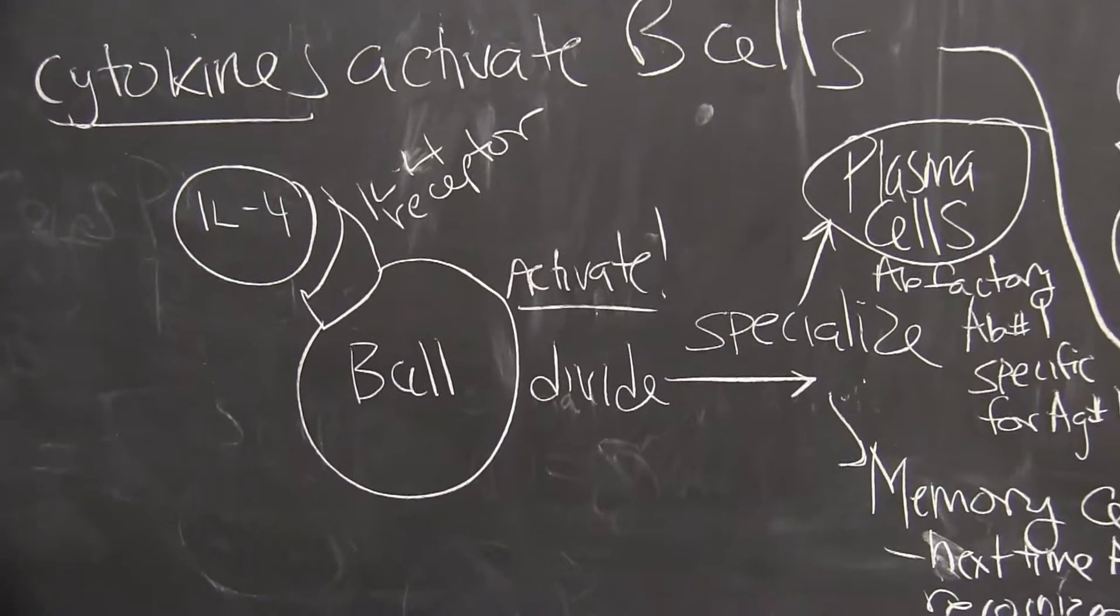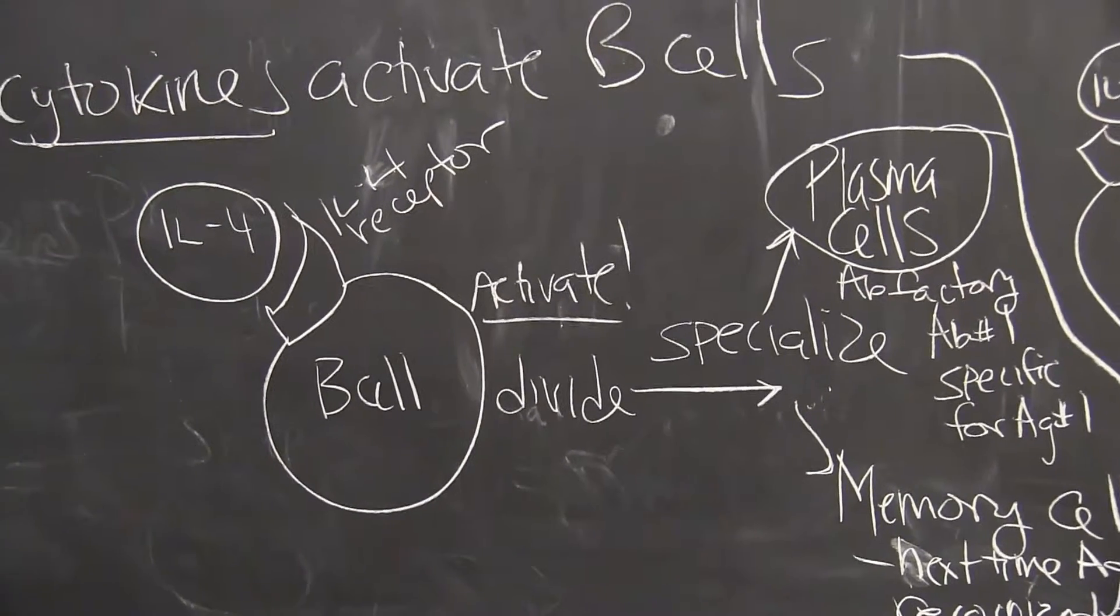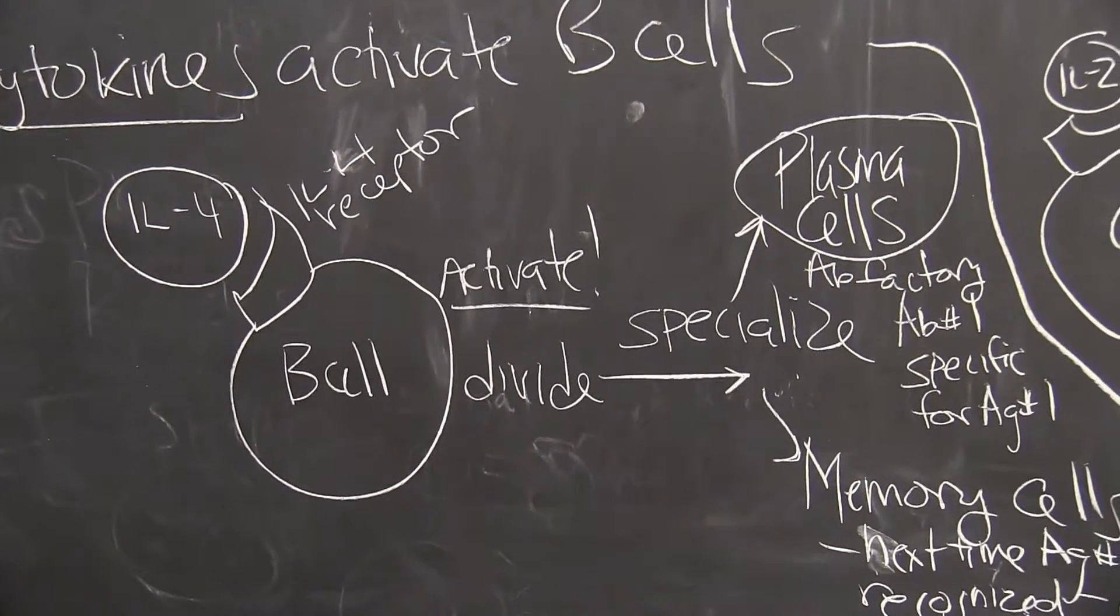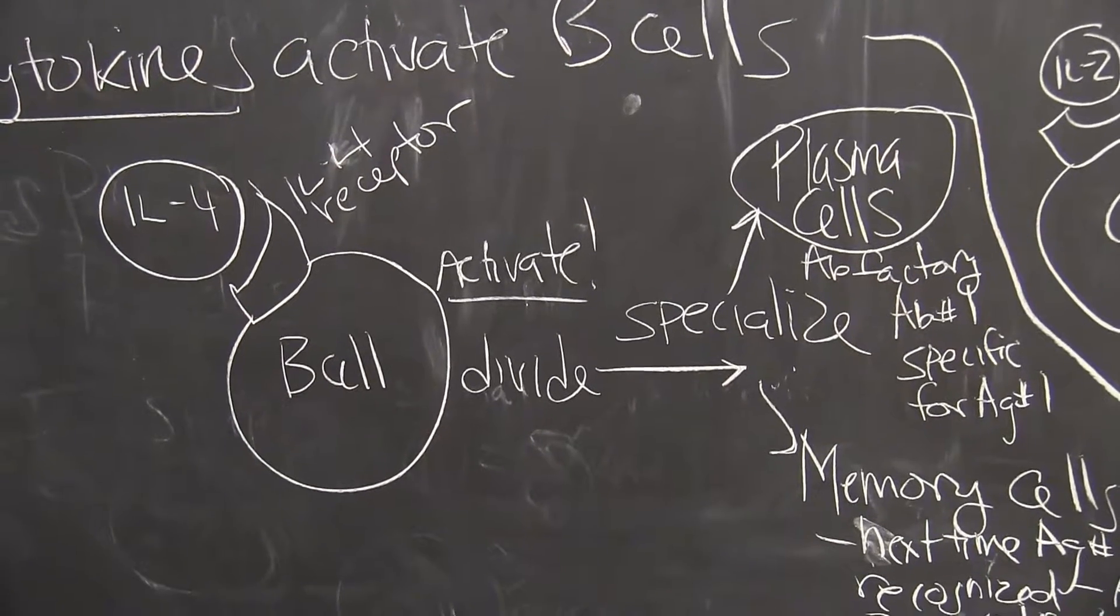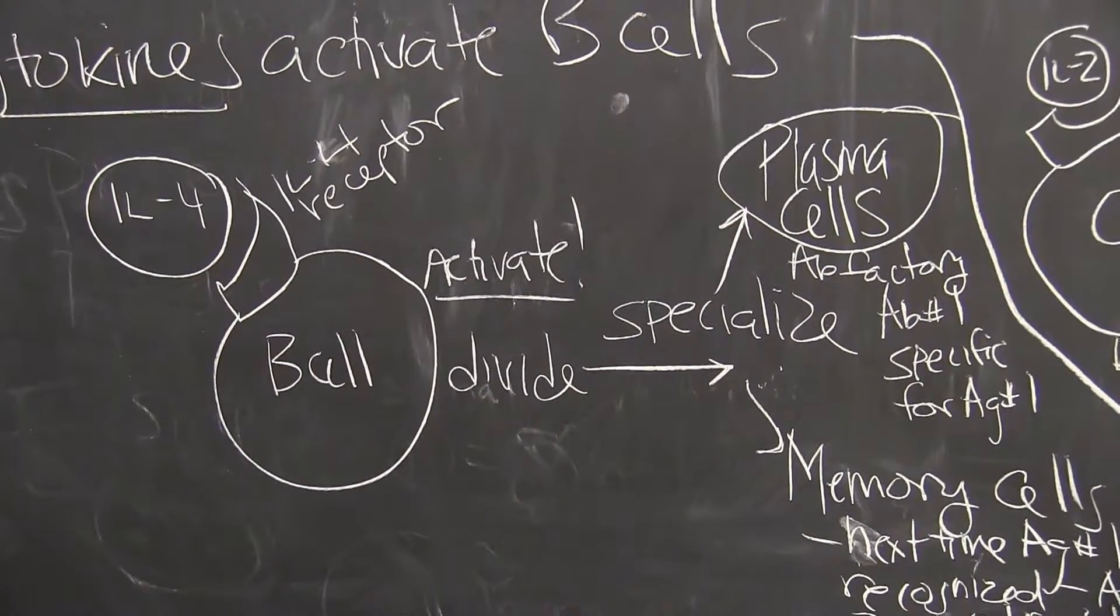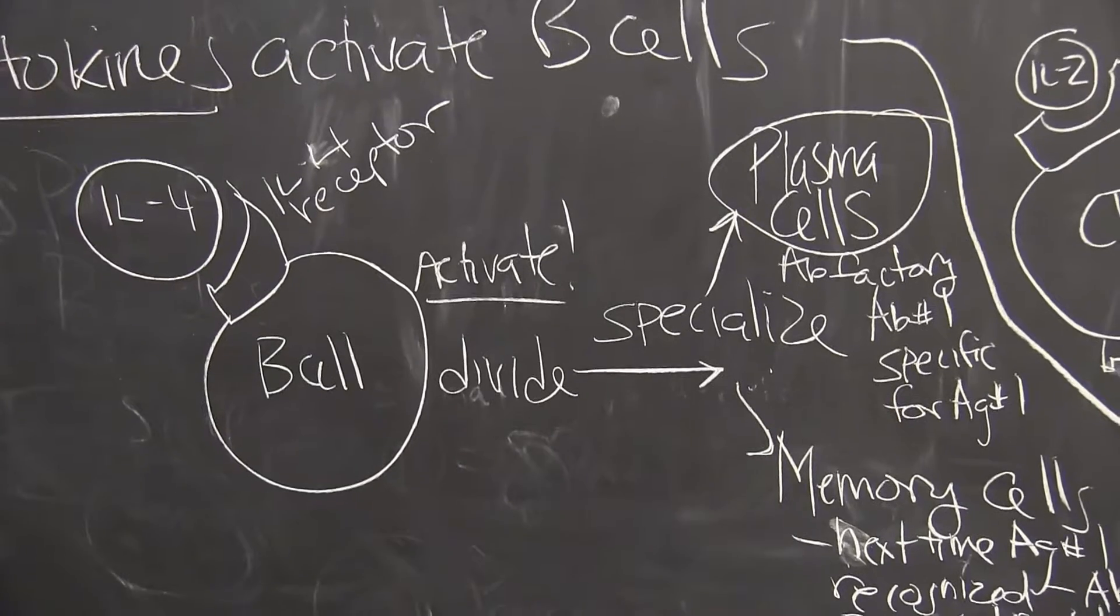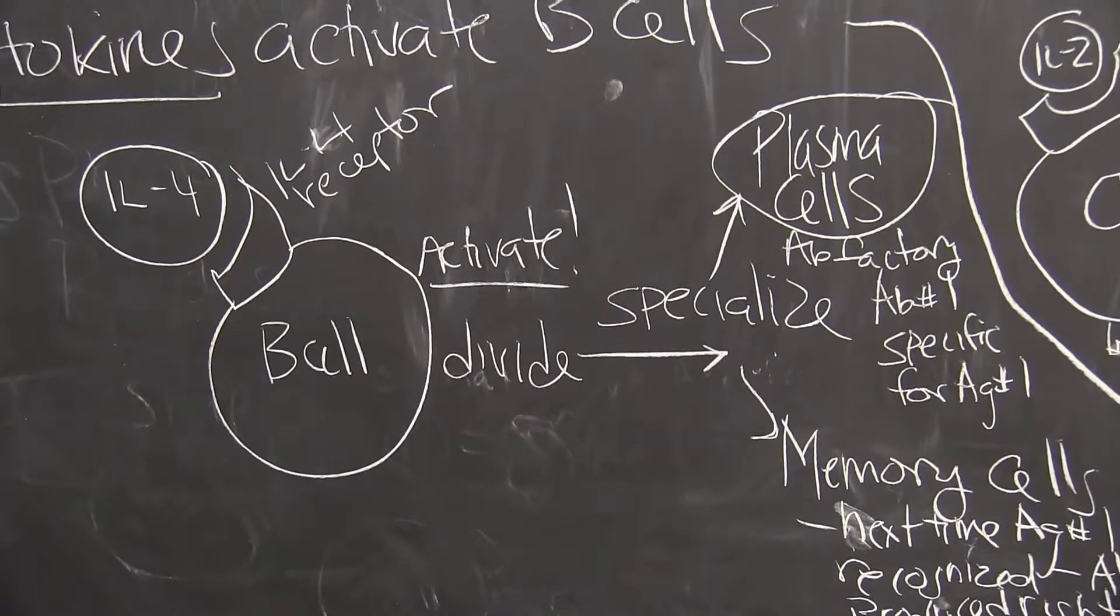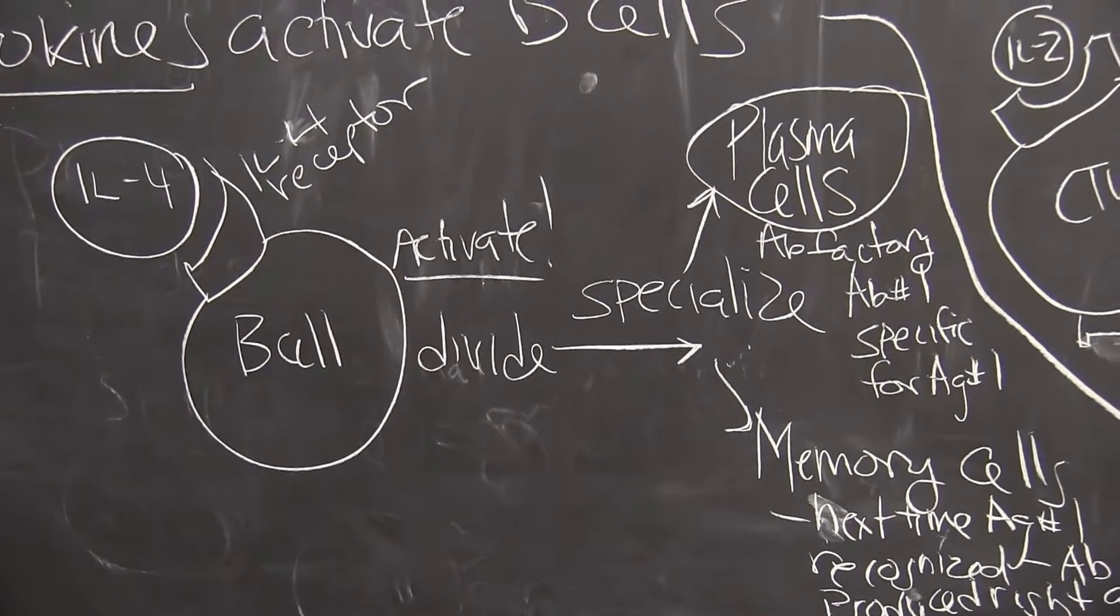It goes around and looks for its specific receptor, which is the IL-4 receptor found on B cells. When IL-4 binds to the IL-4 receptor, this leads to activation of the B cell.